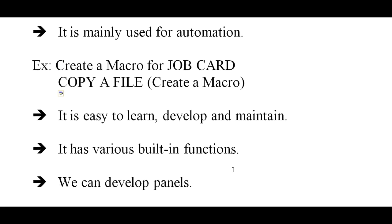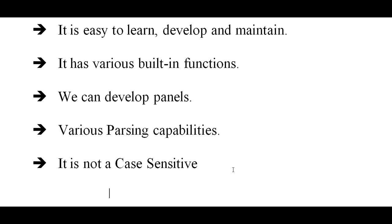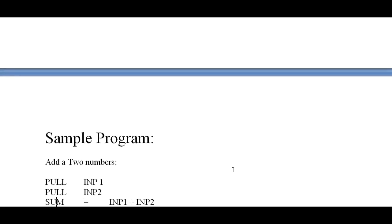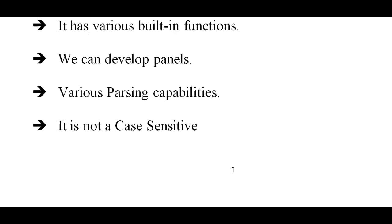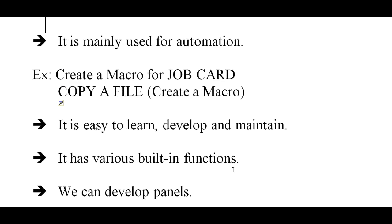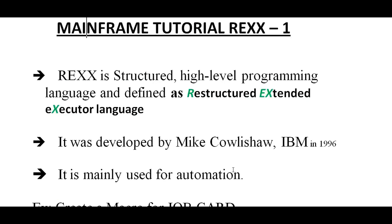In this introduction video, let me show a sample program to add two numbers. You write: pull input1, pull input2, then sum = input1 + input2, and say 'The sum of two values is' sum. That's a simple REXX program. In my next video I will cover different topics, techniques, and macros - the ways to use REXX automation programming. Thank you for watching. If you like this video, please subscribe, share, and comment on my YouTube channel. Have a great day!